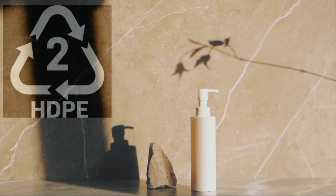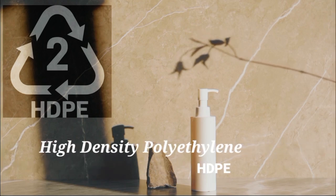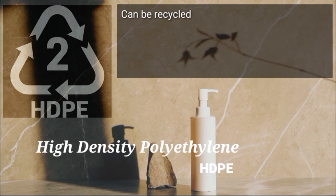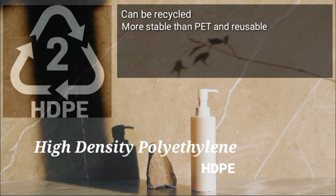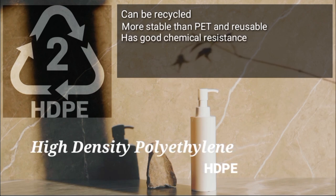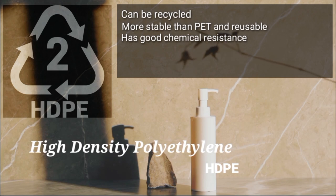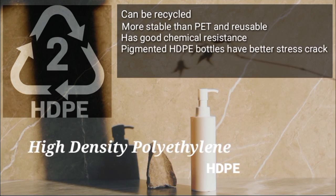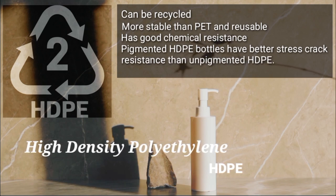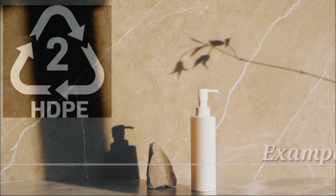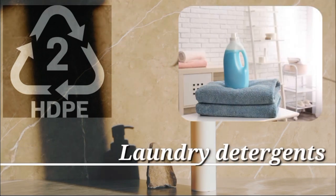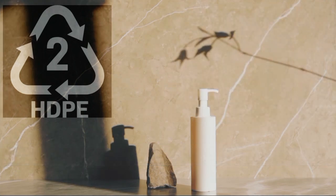Code number two: High-Density Polyethylene (HDPE) — can be recycled. It is considered one of the safest forms of plastic, more stable than PET, and reusable. It has good chemical resistance and is used for packaging many household and industrial chemicals such as detergents and bleach. Pigmented HDPE bottles have better stress crack resistance than unpigmented HDPE. Examples include milk jugs, laundry detergents, and shampoo bottles.